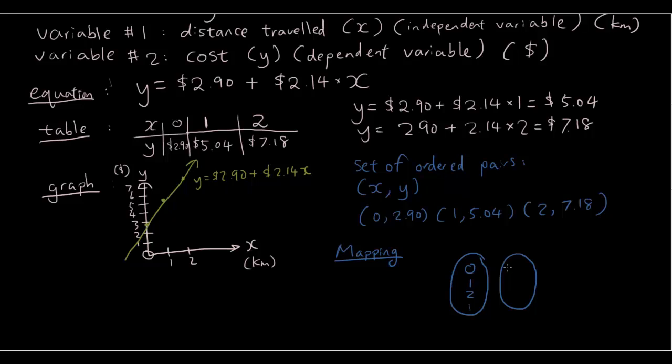And for y, we got $2.90, $5.04, $7.18 and so on. And let's just draw the arrows. So, 0 kilometers corresponds to $2.90, $1 corresponds to $5.04 and so on. So, that is the mapping representation.